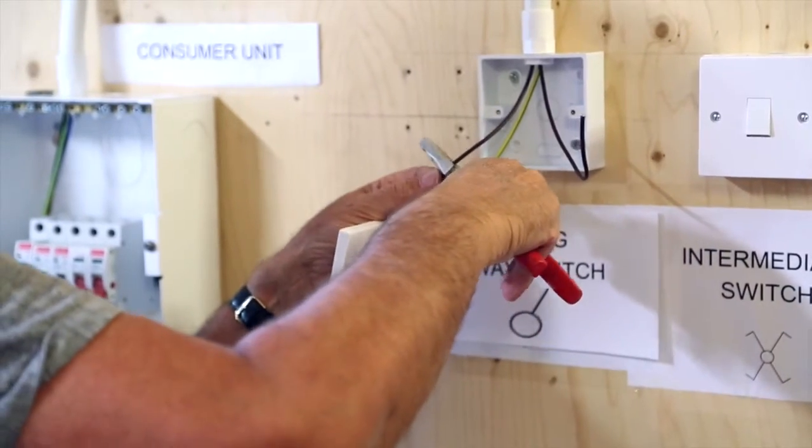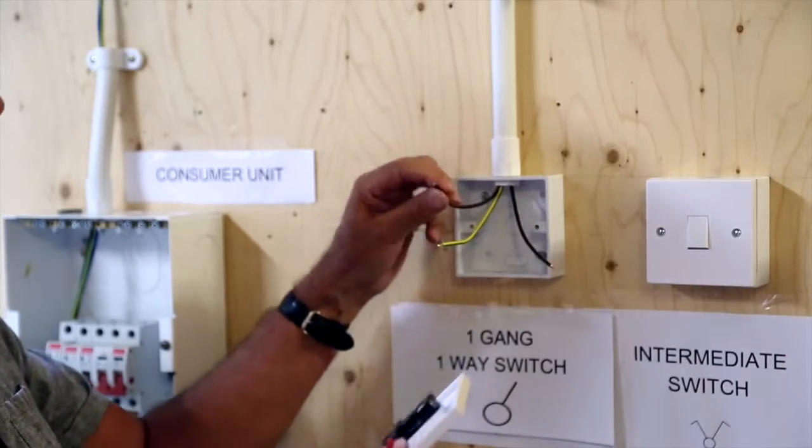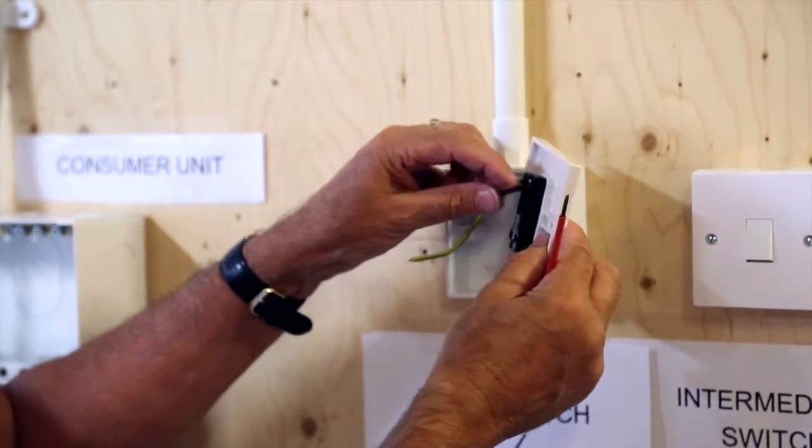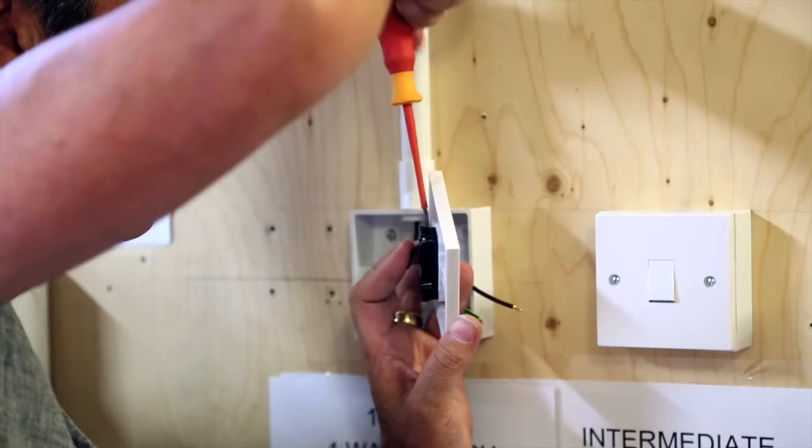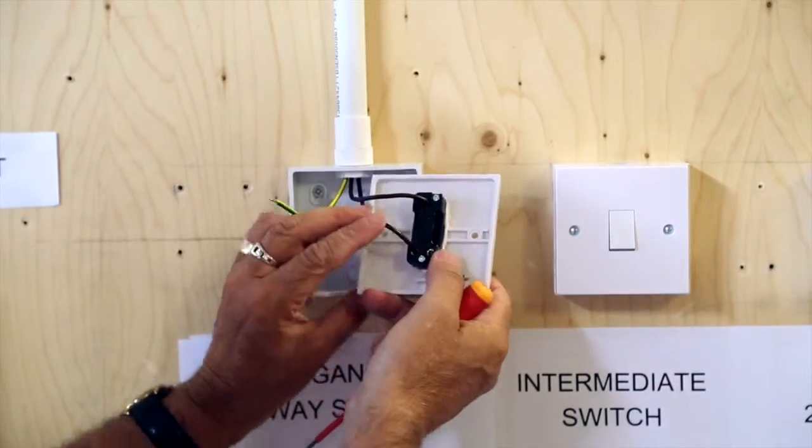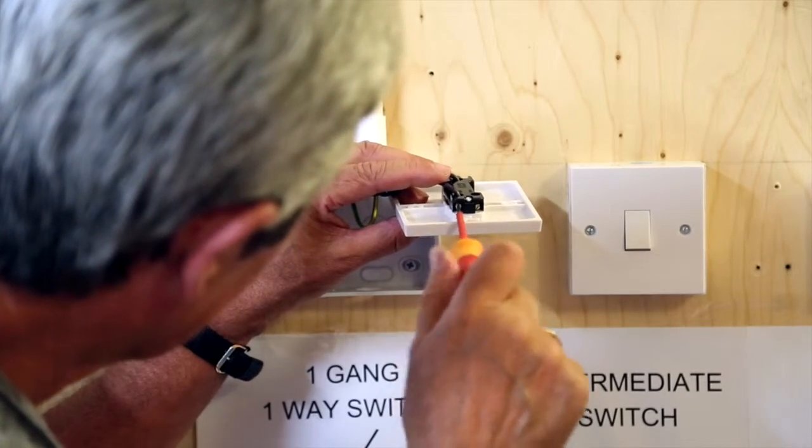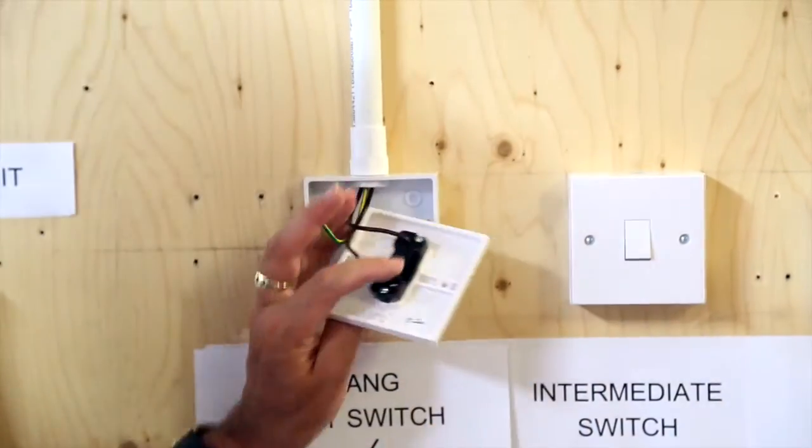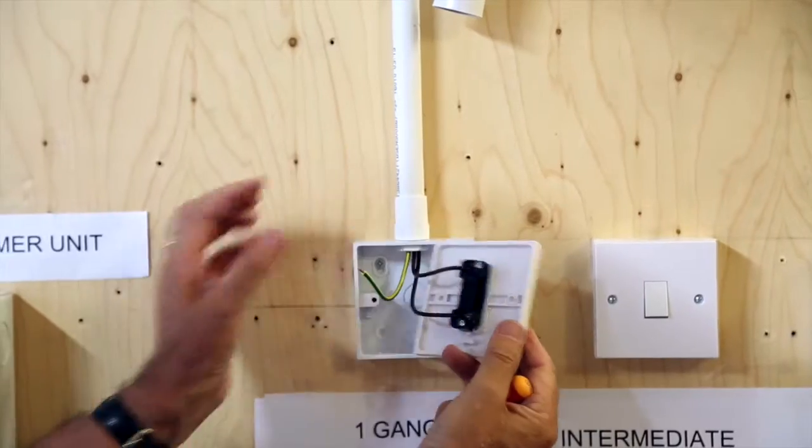This is identified as the cable from the consumer unit which now goes into the common. You'll notice there that it's a clean entry and there's no copper showing outside the connection. We then now connect our return to the ceiling rose via the one-way element of the switch. And nice and tight. Never really over tighten these screws because they will put pressure on the copper. And there we have our connections on the switch.